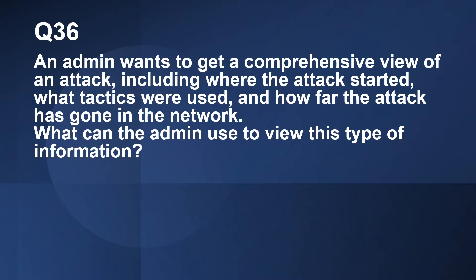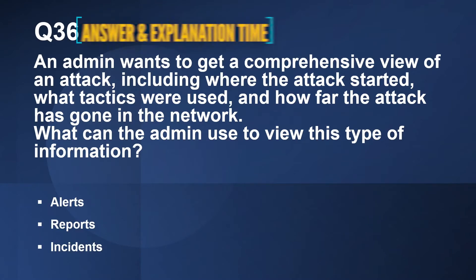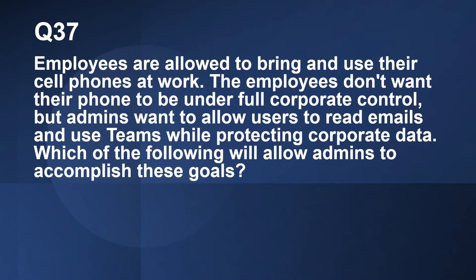Question number 36: An admin wants to get a comprehensive view of an attack, including where the attack started and how far the attack has gone in the network. What can the admin use to view this type of information? Options are: Alerts, Reports, Incidents. The correct answer is Incidents. An incident is a collection of correlated alerts that make up the story of an attack.